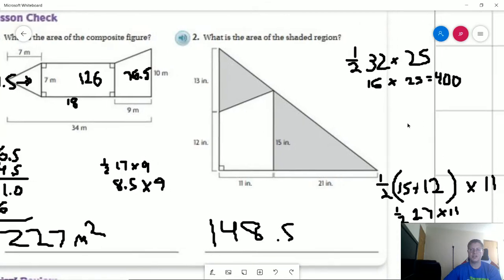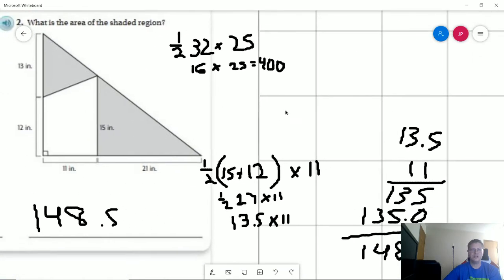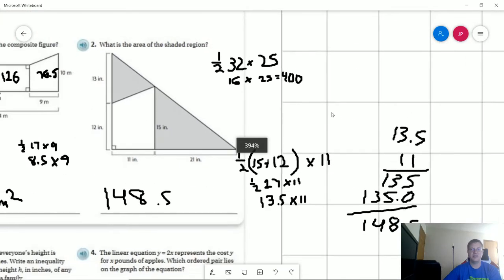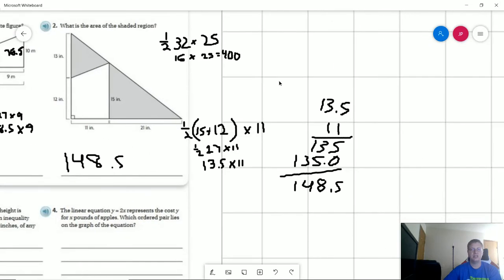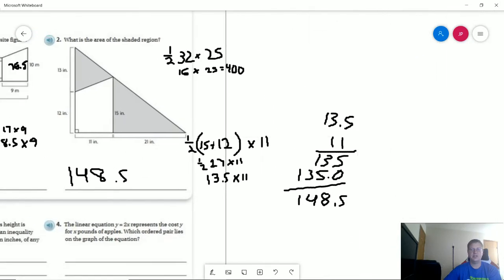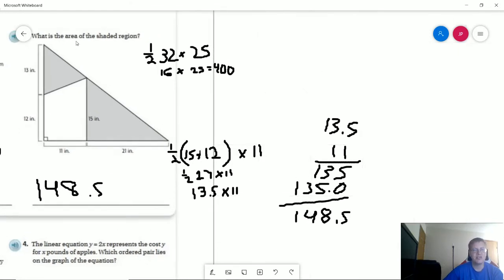And our last problem I'm going to try to scoot this all the way over. And I might even zoom out a little bit so that we can get this further up the screen. I know that my face shows up down here sometimes and that blocks everything. So to find the area of the shaded region we're going to start by finding the total area. So we're going to have 32 times 25 times one half to get the entire area of the triangle. That's going to give us an area of 400.